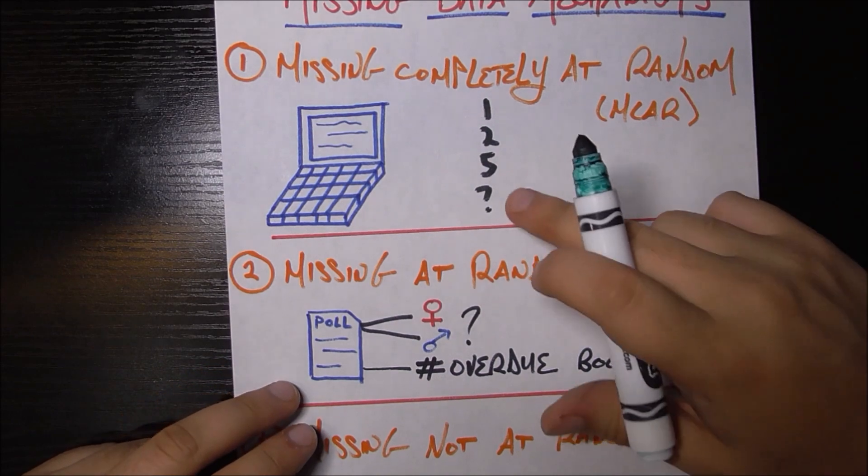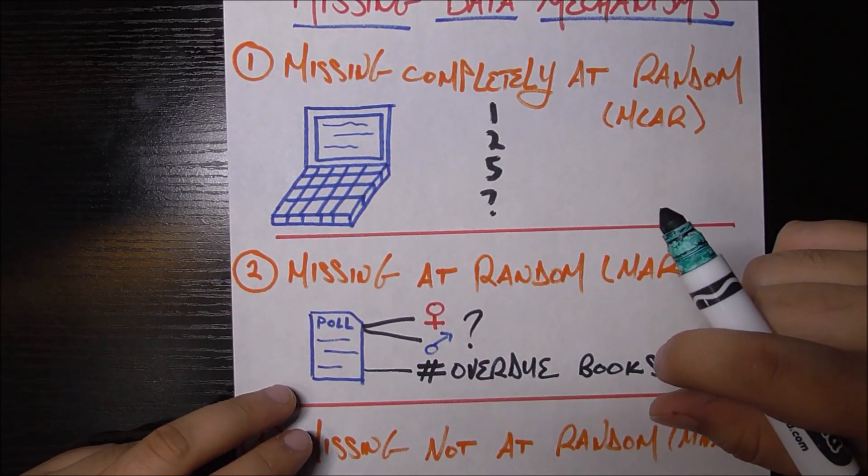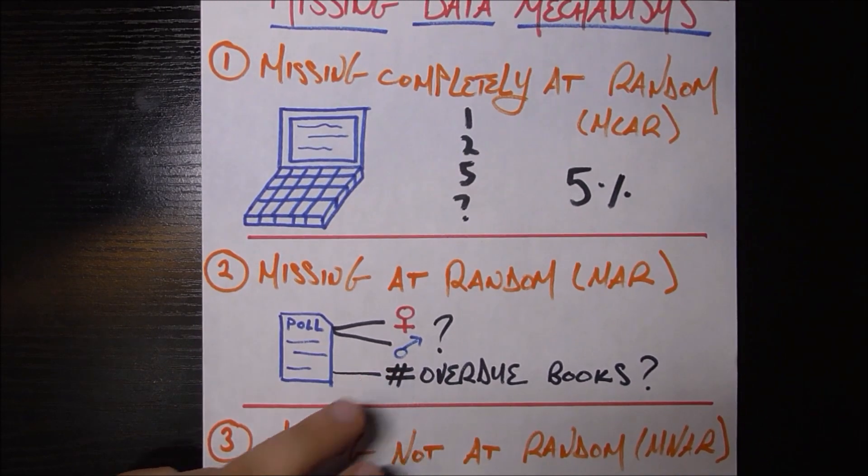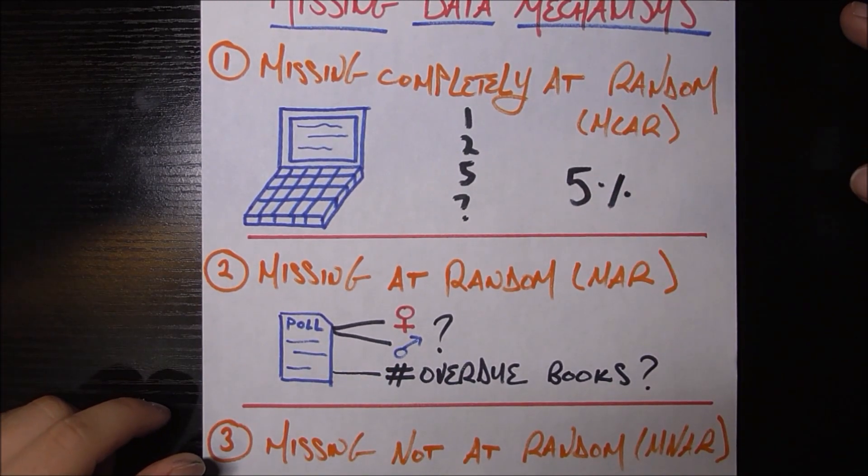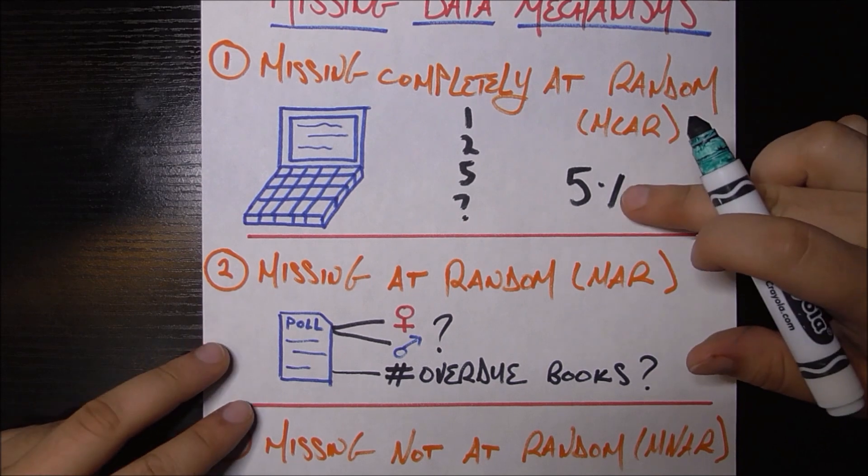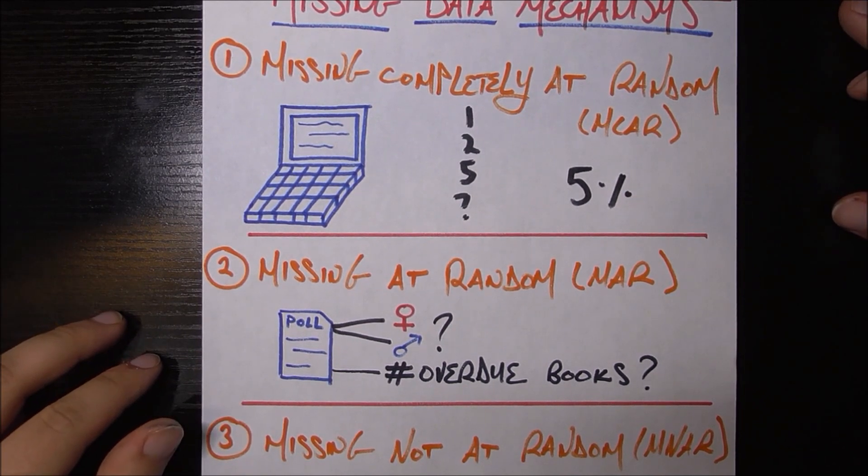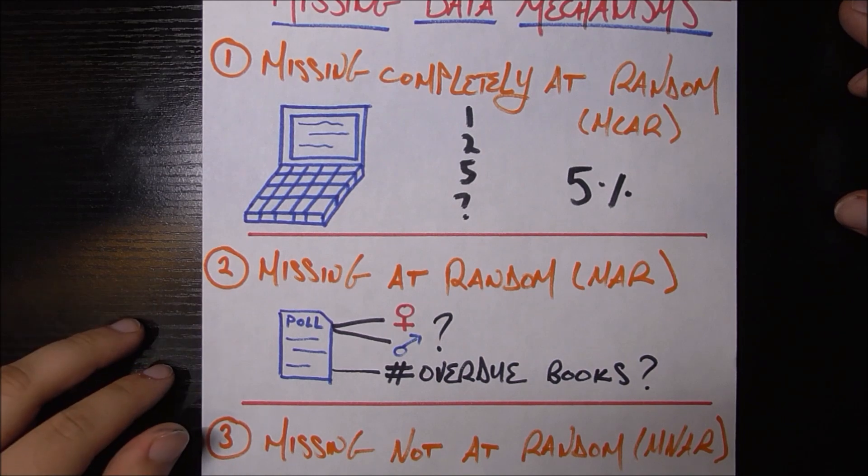So you go ask the librarian and say, hey, this value is missing. And the librarian says, oh yeah, about 5% of the time, our librarians forget to type a value in, just human error. And then you ask, is this 5% based on anything about the patron or about the book that they have overdue? And the librarian says, nope, it's completely random.